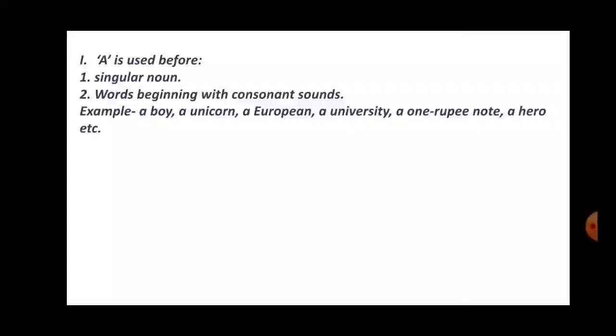European same, U means Y-O-U. A European. Don't see E. If you will see just E, you will think that E is a vowel and you will write an. But it is wrong. Always go for the sound.